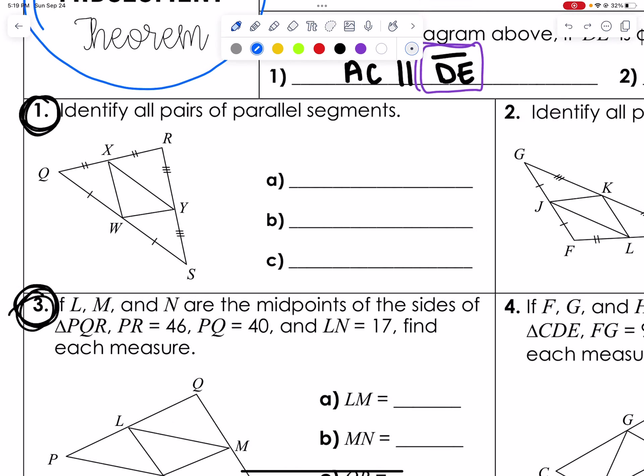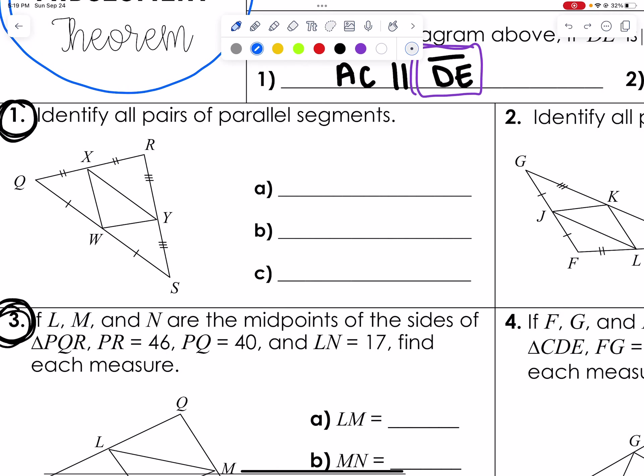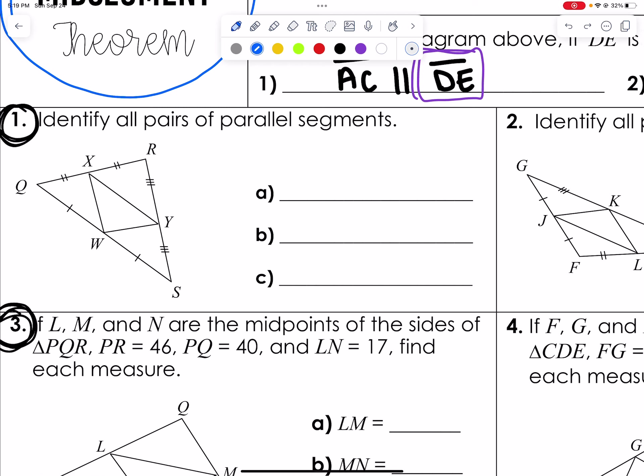Let's see what that looks like in the work. So for question 1, it says identify all pairs of parallel segments. Have your colors out and ready for this one. I'm just going to randomly start from the top. So let's go from QR. I see QR has been split in half, meaning this is going to be the midsegment. What is opposite and parallel to QR? That would be WY.